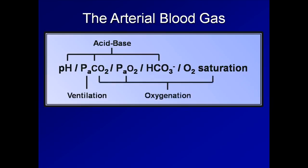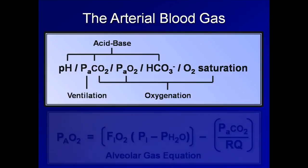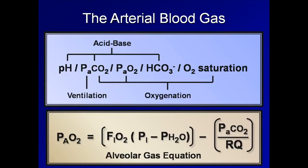Finally, the PaCO2, PaO2, and the O2 saturation tell us about the patient's oxygenation. The alveolar gas equation allows one to calculate the alveolar oxygen tension, denoted as PAO2. The difference between the calculated PAO2 and the measured PaO2 is an important physiologic parameter known as the A-a gradient, which provides important information regarding the adequacy of a patient's alveolar-arterial membrane through which oxygen and carbon dioxide diffuse.